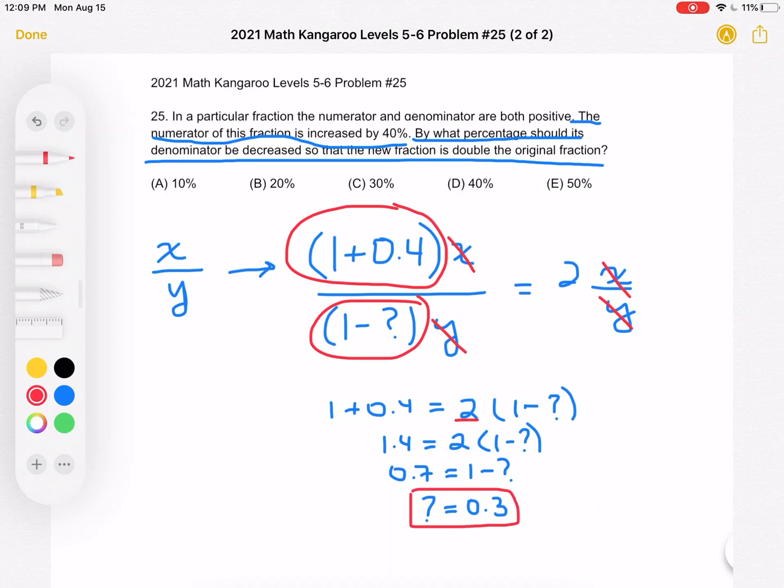So again, in this problem, I represented all the percentages as decimals. So 0.3 is equal to 30%. And that is answer choice C.